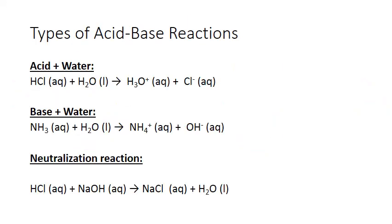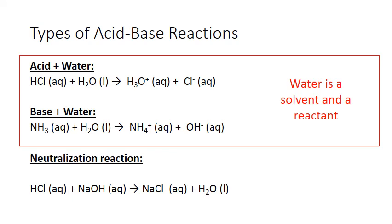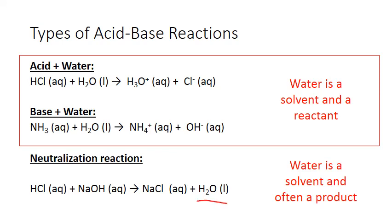So we've just looked at examples of the first two types of reactions — acid plus water and base plus water. In both of these types of reactions, water was both a solvent and a reactant. In the last type of reaction, the neutralization reaction, water is a solvent and often a product as well. A neutralization reaction is one in which an acid and a base react with each other. For example, here hydrochloric acid reacts with sodium hydroxide to produce sodium chloride and water. The products of a neutralization reaction almost always include an ionic compound formed from the cation of the base and the anion of the acid.